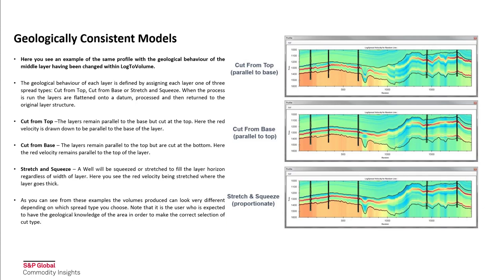In the cut from top image, the layers remain parallel to the base but cut at the top. Here the red velocity is drawn down to be parallel to the base of the layer. In the middle image, cut from base, the layers remain parallel to the top but are cut at the bottom. Here the red velocity remains parallel to the top of the layer. In stretch and squeeze, you can see a well being squeezed or stretched to fill the layer horizon regardless of the width of the layer. The red velocity is then stretched where the layer goes thick or squeezed where the layer goes thin.